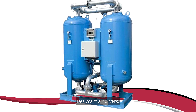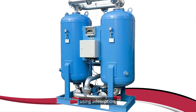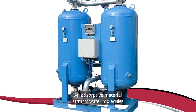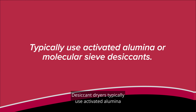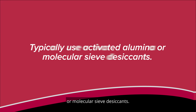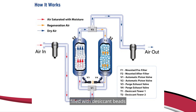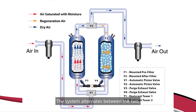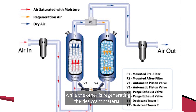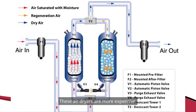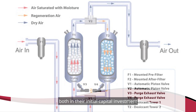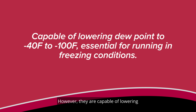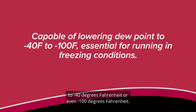Desiccant air dryers work by removing water vapor from the air using absorption. An absorptive material attracts water molecules and binds them to the surface of the material. Desiccant dryers typically use activated alumina or molecular sieve desiccants. Most desiccant air dryers have two towers filled with desiccant beads to allow for continual operation. The system alternates between the two, allowing one to dry the compressed air while the other is regenerating the desiccant material. These air dryers are more expensive in both initial capital investment and operating and maintenance costs. However, they are capable of lowering the dew point to minus 40 degrees Fahrenheit or even minus 100 degrees Fahrenheit.